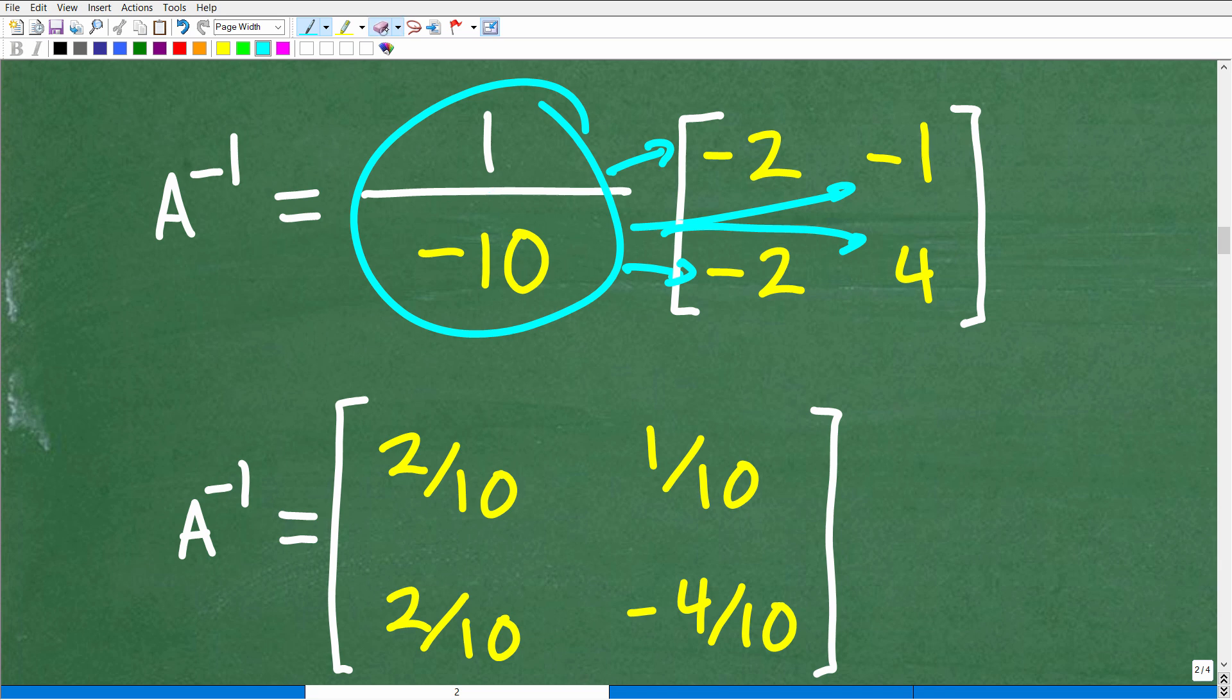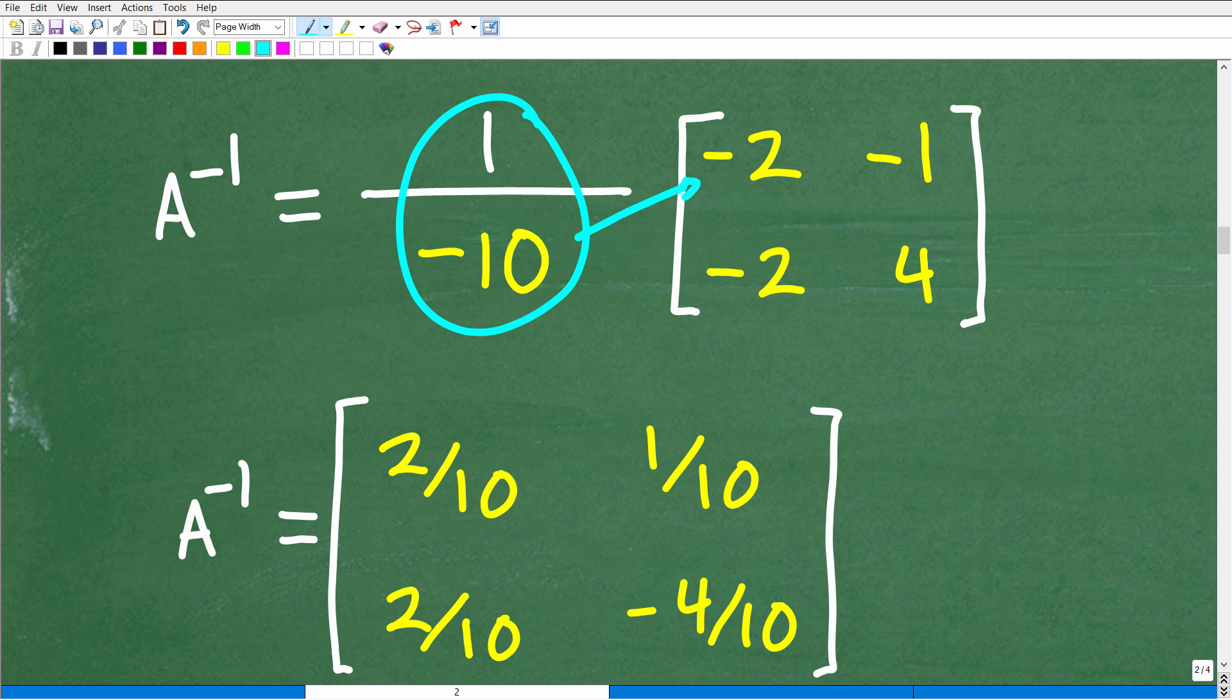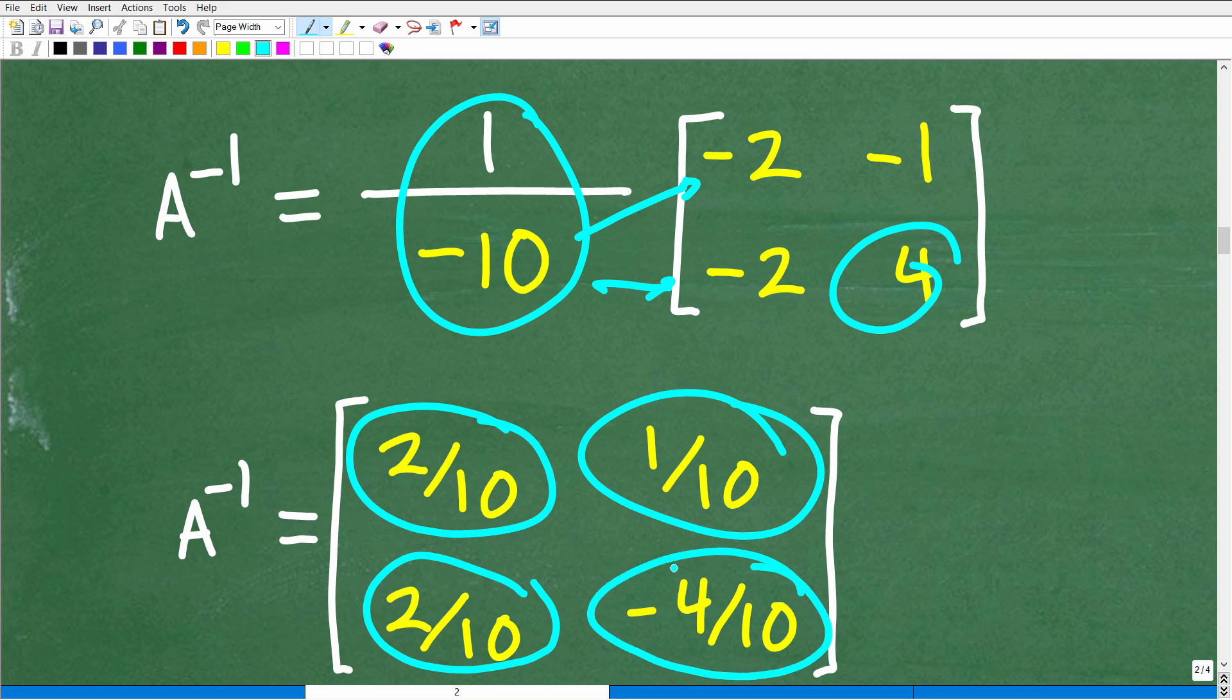...so we're going to take this 1 over negative 10, excuse me. I'm going to erase this here, and we're going to multiply it by each one of these entries. So, 1 over negative 10 times negative 2 will produce a 2 over 10. So, this times this negative 2 is another 2 over 10. Again, 1 over negative 10 times this negative 1 is positive 1 over 10, and 1 over negative 10 times this 4 is going to be a negative 4 tenths.